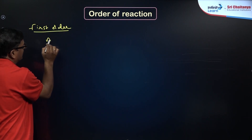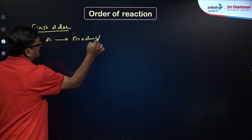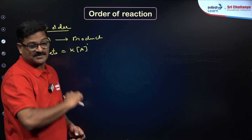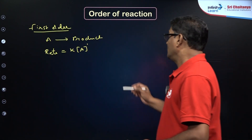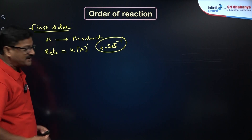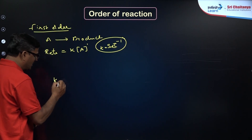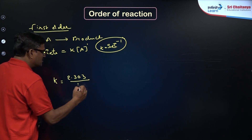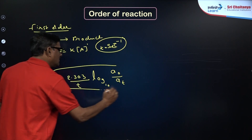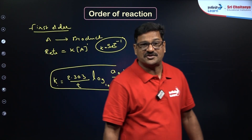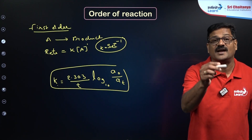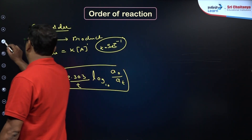For the first order reaction, if A gives rise to product, the rate of reaction = k[A]^1, so it is a first order reaction. The unit of k for a first order reaction is s⁻¹ (second inverse). The integrated rate expression for the first order reaction is: k = (2.303 / t) × log₁₀([A]₀ / [A]t), where k is the rate constant, t is time, [A]₀ is initial concentration, and [A]t is concentration at time t.